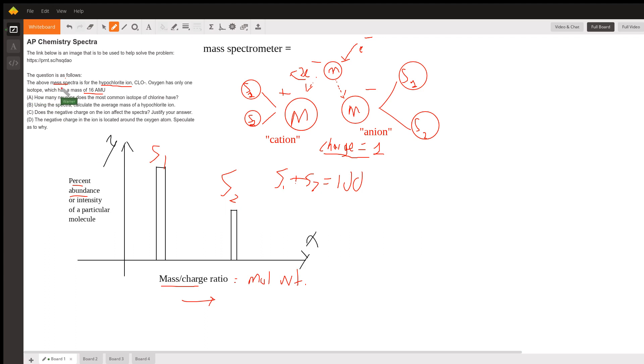The above mass spectrum, which is given, is for the hypochlorite ion, ClO minus. Oxygen has only one isotope, which has a mass of 16 atomic mass units.